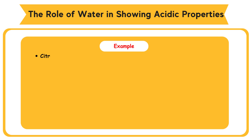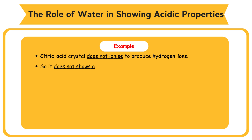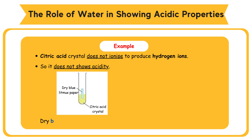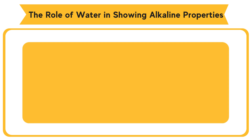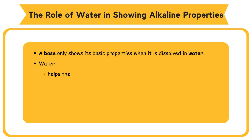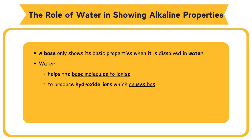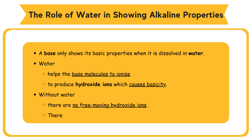Example: citric acid crystal does not ionize to produce hydrogen ions, so it does not show acidity. Dry blue litmus paper remains blue. Citric acid dissolved in water turns dry blue litmus paper red. A base only shows its basic properties when it is dissolved in water. Water helps the base molecules to ionize to produce hydroxide ions, which causes basicity. Without the presence of water, there are no free-moving hydroxide ions, therefore alkalis do not show alkalinity.